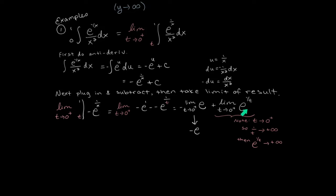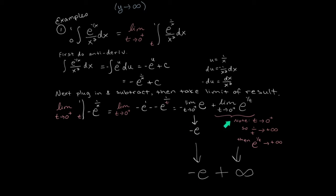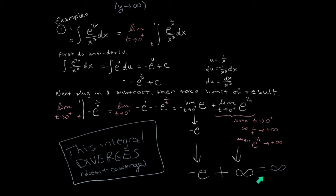This next limit we need to do piece by piece. The t values are approaching zero from the right — looking at the inner piece, what does one over t approach? If t approaches zero from the right, one over t approaches infinity. Then what happens when you have an exponent which is infinity plugged into the exponential? E to the infinity power goes to infinity. So we've got negative e for the first limit plus infinity for the second limit. Our final answer is that this limit goes to infinity — the value of this limit does not exist, it's infinite, and so the integral diverges.